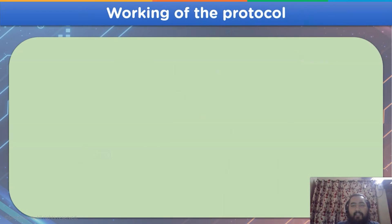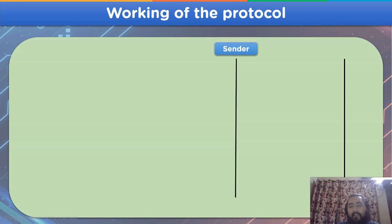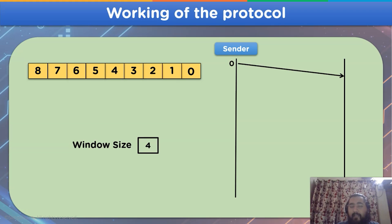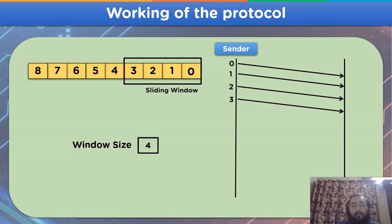We will divide the working process of the SRP protocol into multiple steps for better understanding. We have a sender side and a receiver side, along with a sequence of numbers and our window size. We send the first four data frames: frame 0, frame 1, frame 2, and frame 3. These four frames are sent first because our window size is 4, and a sliding window spans from sequence number 0 to sequence number 3.